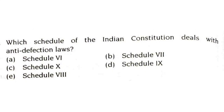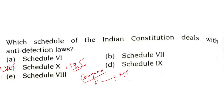Which schedule of the Indian constitution deals with anti-defection laws? Schedule 10 talks about anti-defection laws and it was inserted in the year 1985. Defection means joining the opposite party — for example, if a candidate wins from Congress and then joins BJP, that is known as defection. The anti-defection laws are provided in Schedule 10 of the Indian constitution.